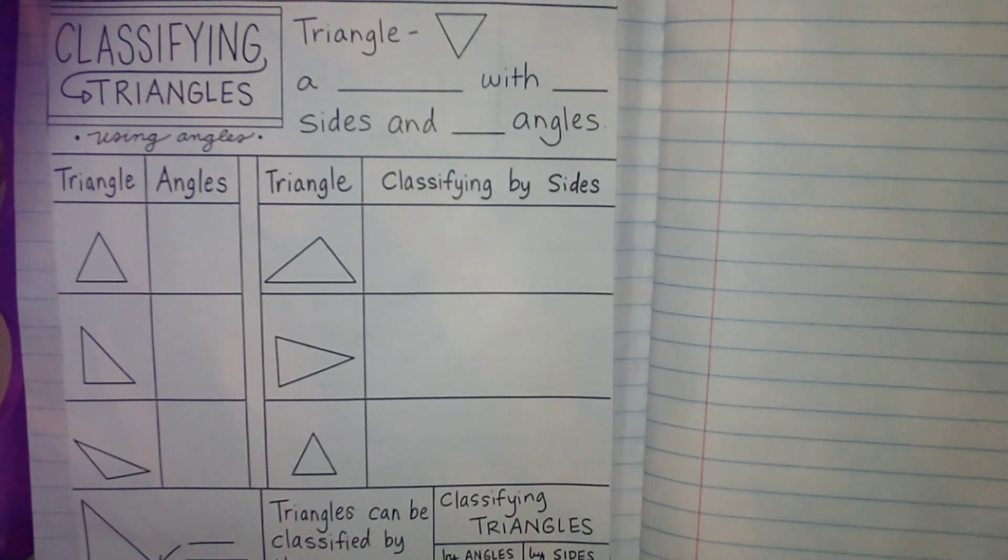We talked about angle sizes, acute, obtuse, and right angle triangles. So now we're going to add in the side lengths.